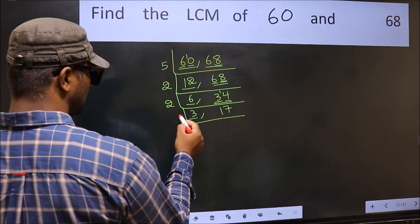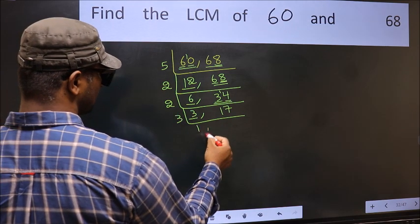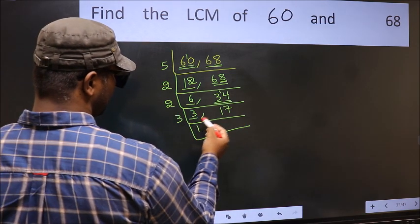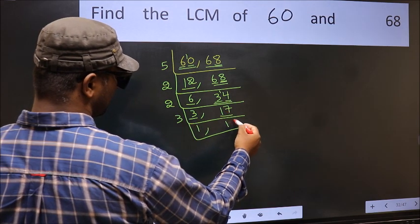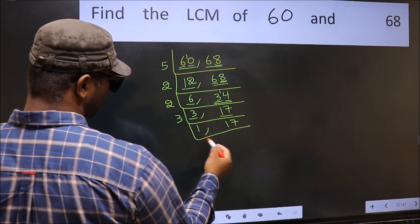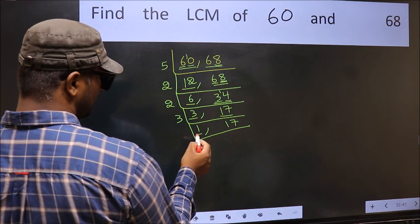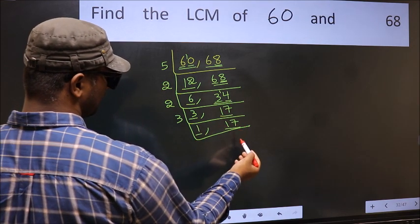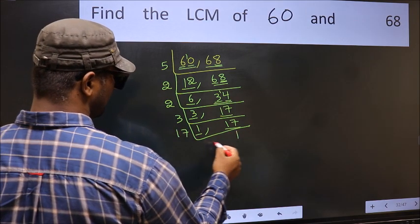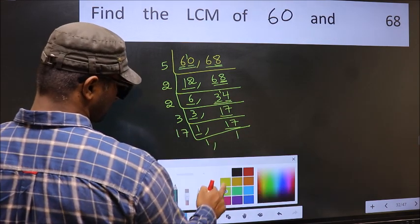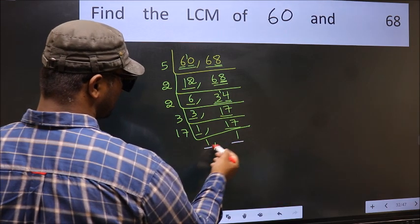Now here we have 3. 3 is a prime number, so 3 times 1 is 3. The other number 17 is not divisible by 3, so you write it down as it is. Now we got 1 here. So focus on the other number 17. 17 is a prime number, so 17 once is 17. So we got 1 in both places.